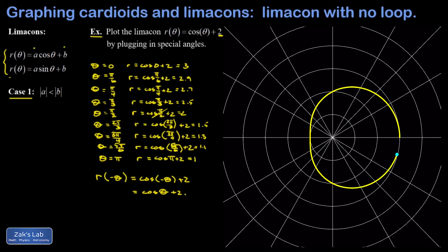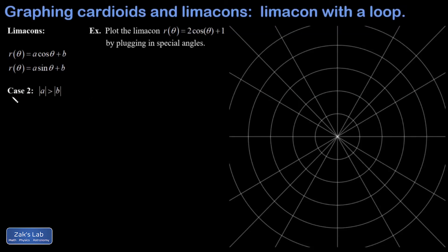So let's bring in the animation of this guy as it's traced out from 0 to 2π. And there's our classic limaçon with no loop. Finally we're going to look at the second case of limaçons, where |a| > |b|.